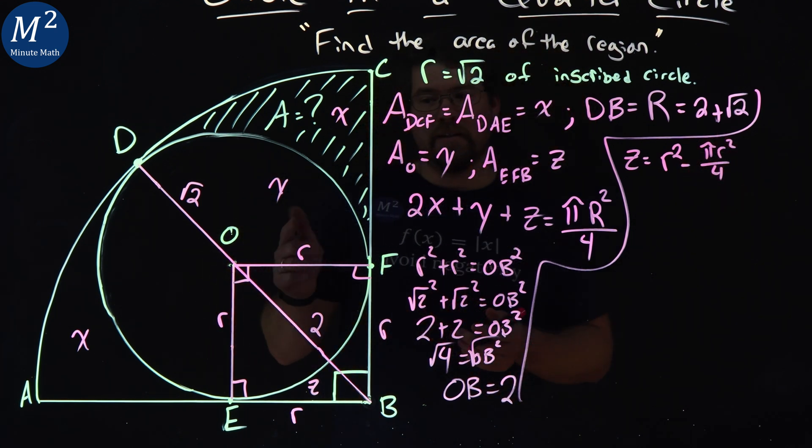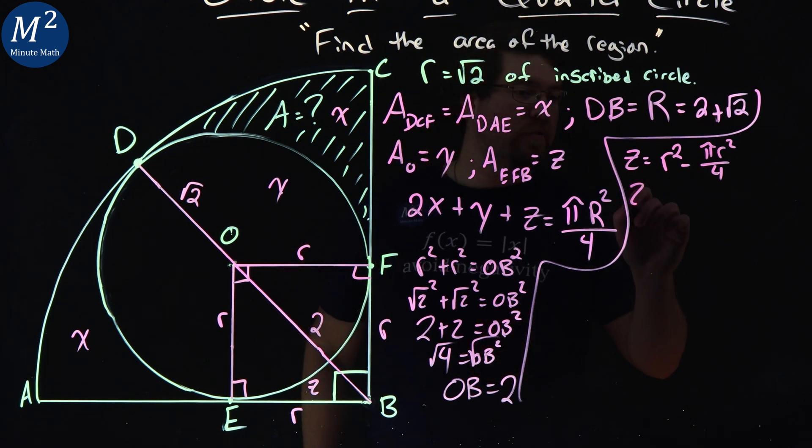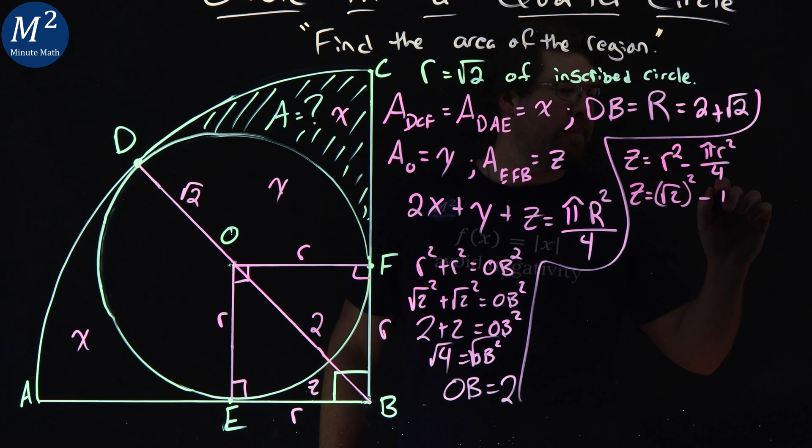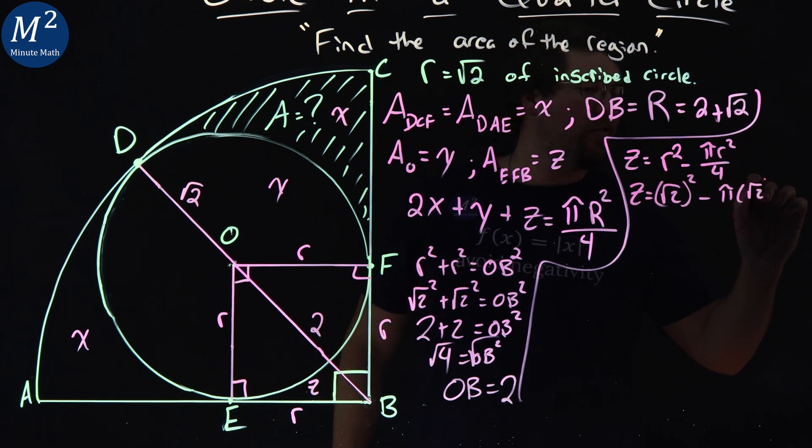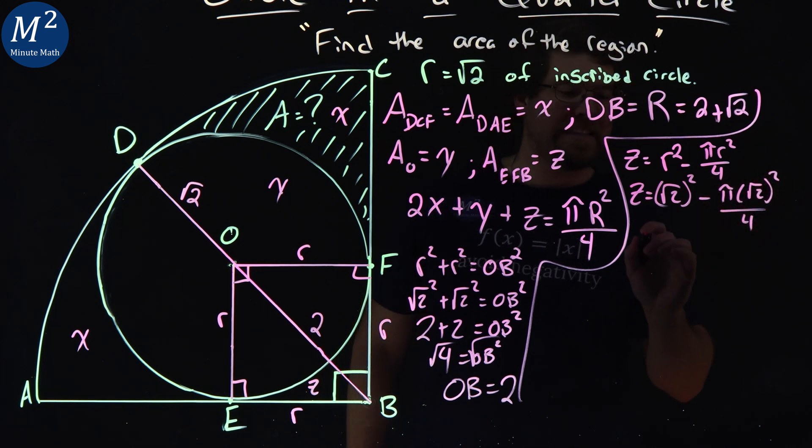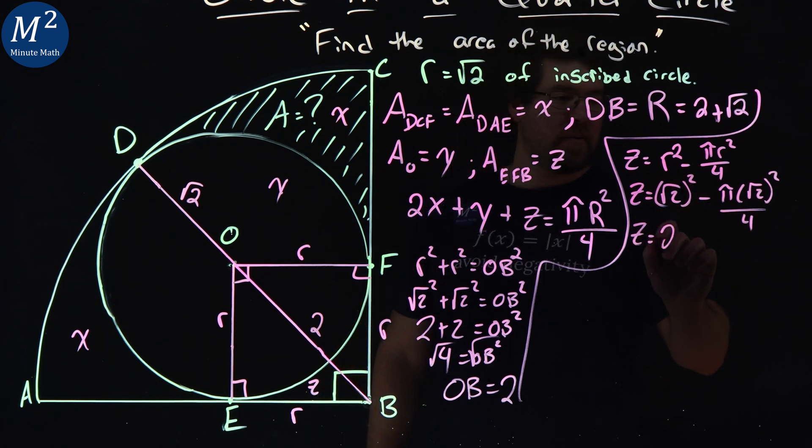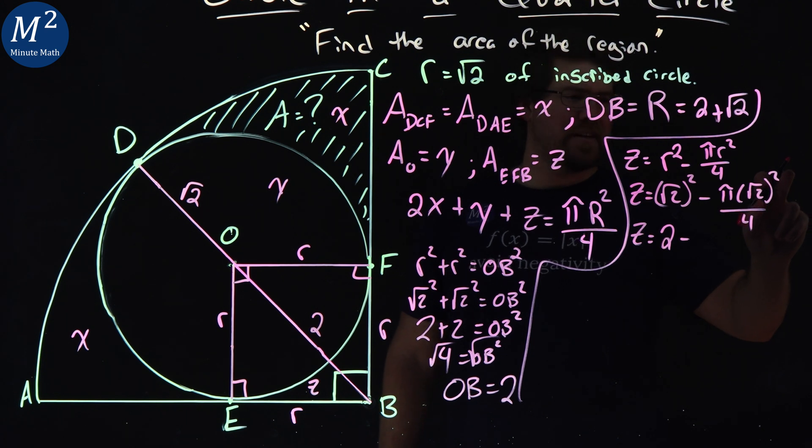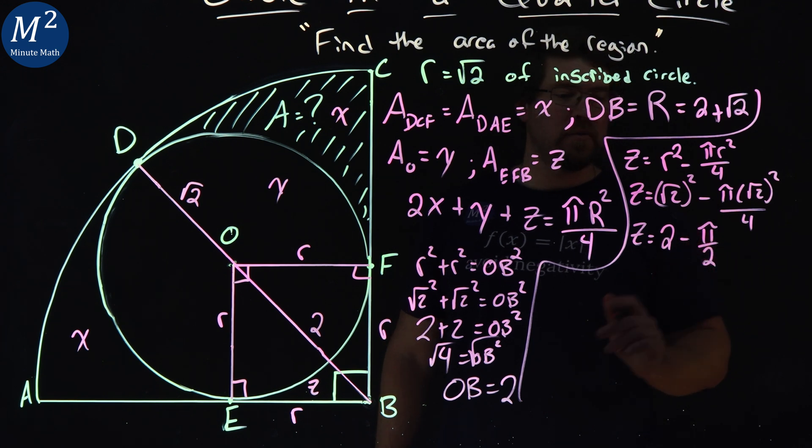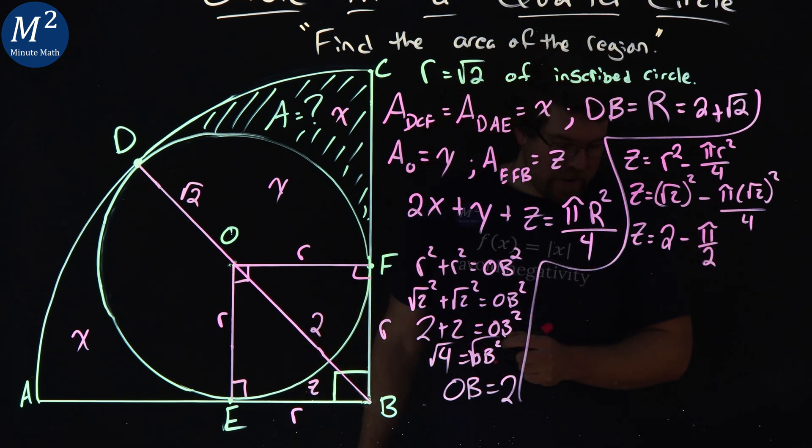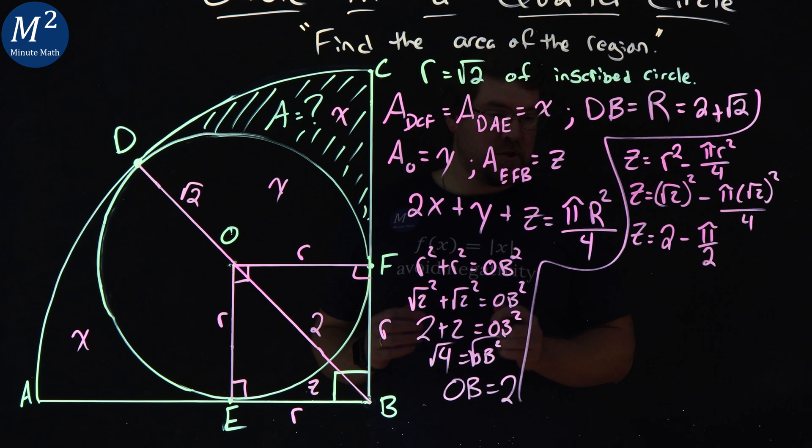So Z equals the square root of 2 squared minus pi square root of 2 all squared over 4. Let's simplify that. Square root of 2 squared is 2, minus the square root of 2 squared is 2. Right there, 2. And then divided by 4 gives me a 2. So we have pi over 2 here. So Z is equal to 2 minus pi over 2.